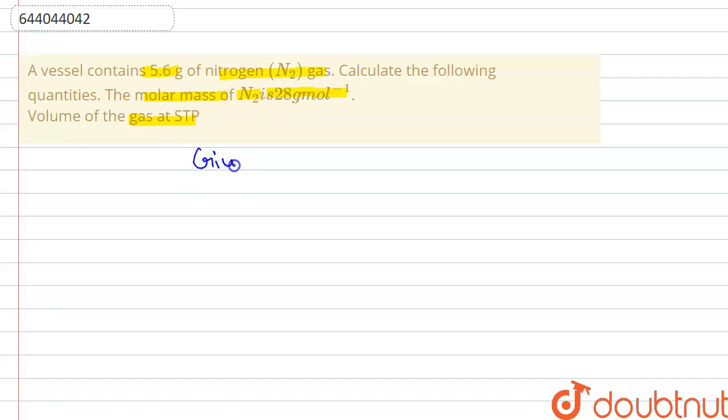The given mass of nitrogen gas is 5.6 grams. So at first, we will calculate the number of moles. The number of moles formula is equal to given mass upon molar mass.